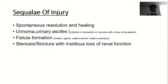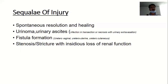Ureteric injury can be followed by spontaneous resolution and healing, or it could lead to urinoma or urinary ascites. In case of necrosis with urinary extravasation, it can lead to fistula formation — uretero-vaginal, uretero-uterine, or uretero-cutaneous fistula — and can also result in stenosis or stricture with insidious loss of renal function.